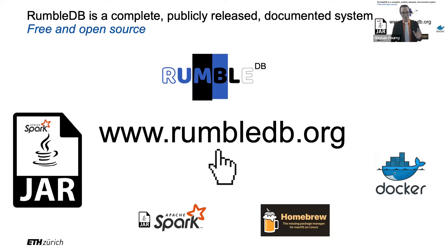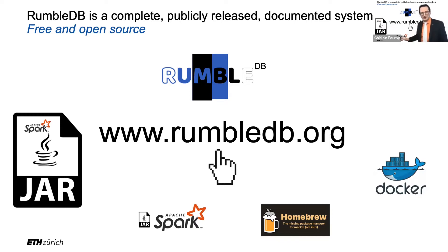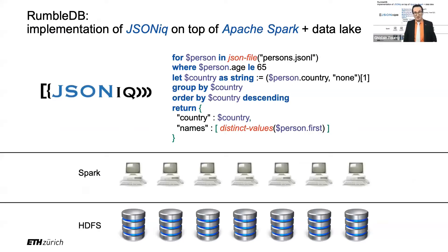Rumble is a complete, publicly released and documented system. It was the work of many of my students over the years. It's basically just a JAR — there are several versions: one that works with Spark that is tinier, and a bigger one that we use today. There's also a way to install it in Homebrew, and we also have a Docker edition.